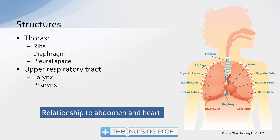Moving into the diaphragm, down at the bottom there you notice the cone shape to the diaphragm, and as the diaphragm contracts, it will flatten out. As it flattens out, it creates a negative pressure, a vacuum in the thoracic cavity, which is then going to suck air down into the lungs.